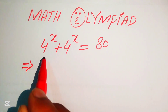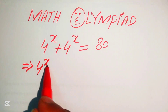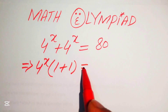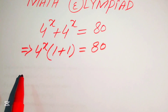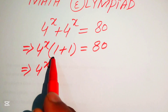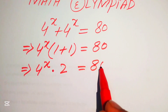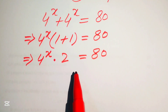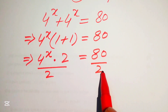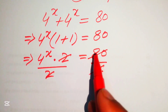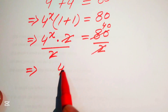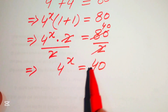First, we see that 4 to the power of x is a common term, so we take out 4 to the power of x. The remaining terms give 1 plus 1 equals to 80. In the next step we rewrite it as 4 to the power of x into 2 equals to 80. To simplify further, we divide both sides by 2, and 80 divided by 2 gives 40. So we get 4 to the power of x equals to 40.